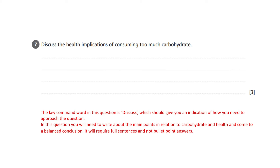This question comes from the food, nutrition and health section of the book and specifically concerns carbohydrate. The question is: discuss the health implications of consuming too much carbohydrate. The key command word is 'discuss', which should give you an indication of how you need to approach the question. You will need to write about the main points in relation to carbohydrate and health, come to a balanced conclusion, and write in full sentences rather than bullet points.